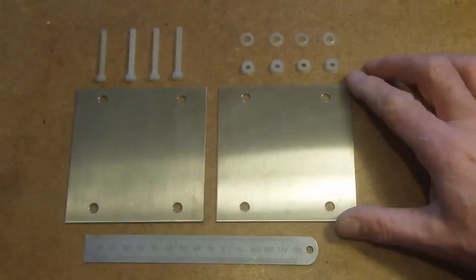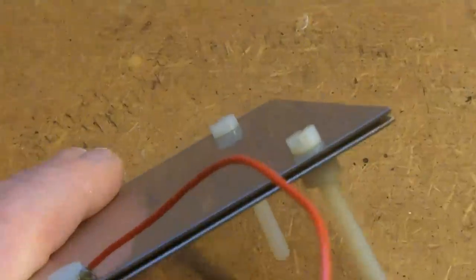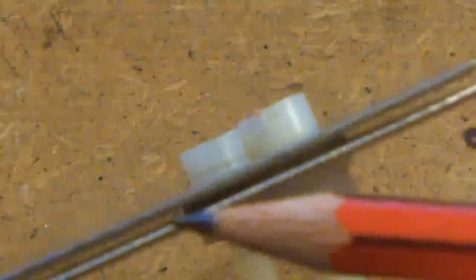This is going to be the basis of my test cell. It's constructed of two sheets of 316 stainless steel with a one millimeter gap between the plates, and it's bolted together with nylon nuts and bolts.